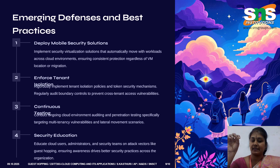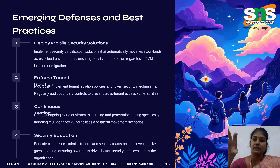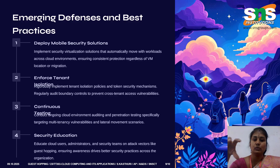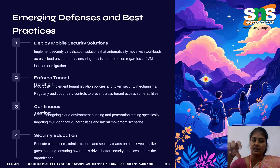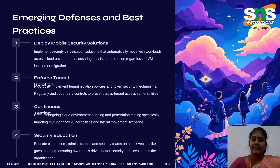Emerging defenses and best practices: cloud security is evolving fast and defenses must move faster. Mobile security solutions should include dynamic workload protection that follows VMs across regions. Enforce tenant isolation through routine updates and token hardening, as adopted by Google Cloud Shield in 2025. Conduct continuous testing via red team simulations and chaos engineering to test isolation layers. Security education also matters — building awareness through training reduces 60% of misconfigurations. AWS Security Hub now includes tenant isolation testing features as part of its 2025 compliance toolkit.